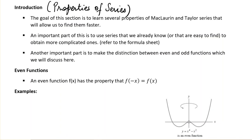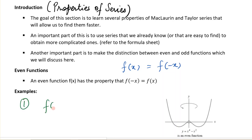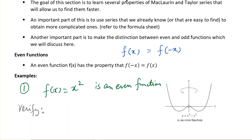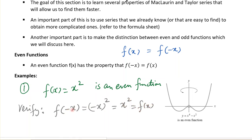Before I jump into the properties of series, I would like to review the concept of even functions and odd functions. An even function is a function which has the property that if you replace x by negative x, you still get the same function back. For example, if we consider f(x) = x², which is a parabola, this is an even function. You can verify by finding f(-x): wherever we have x, we replace that by negative x, and we again get x², which equals f(x). So f(-x) = f(x) — this is our even function.